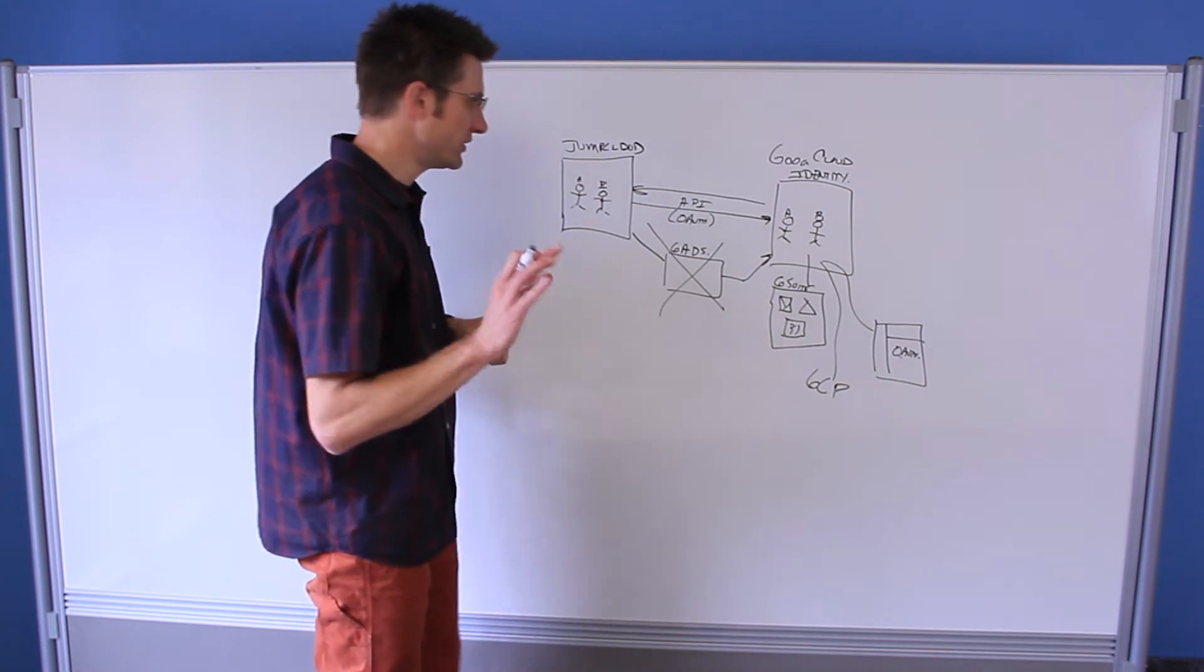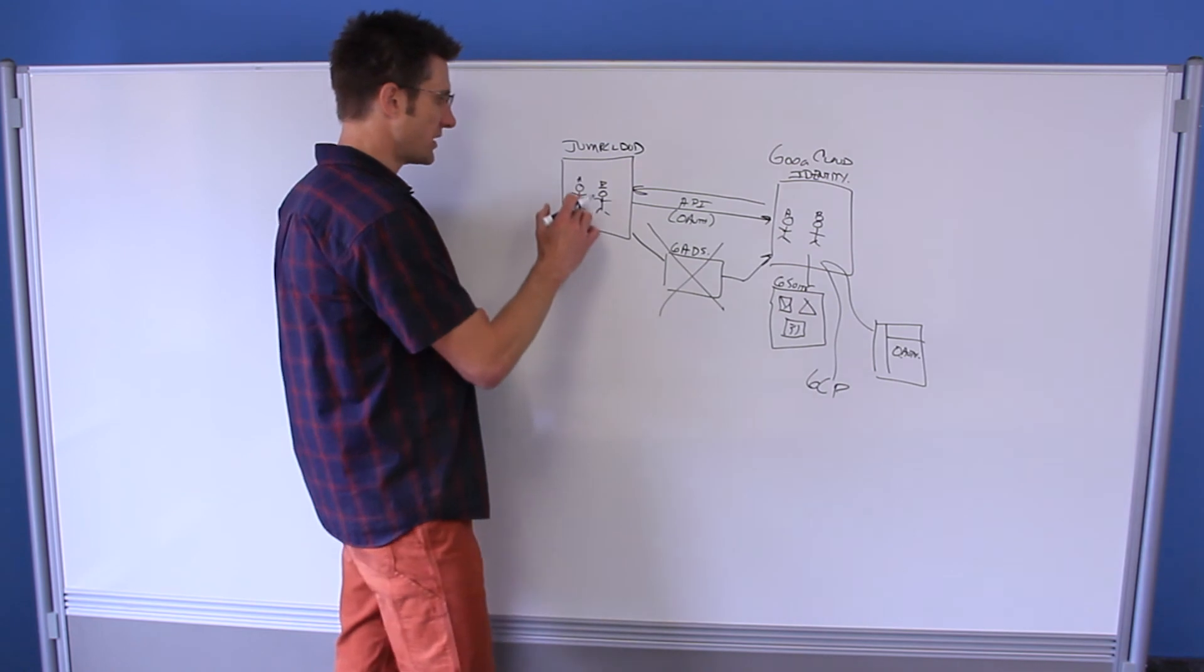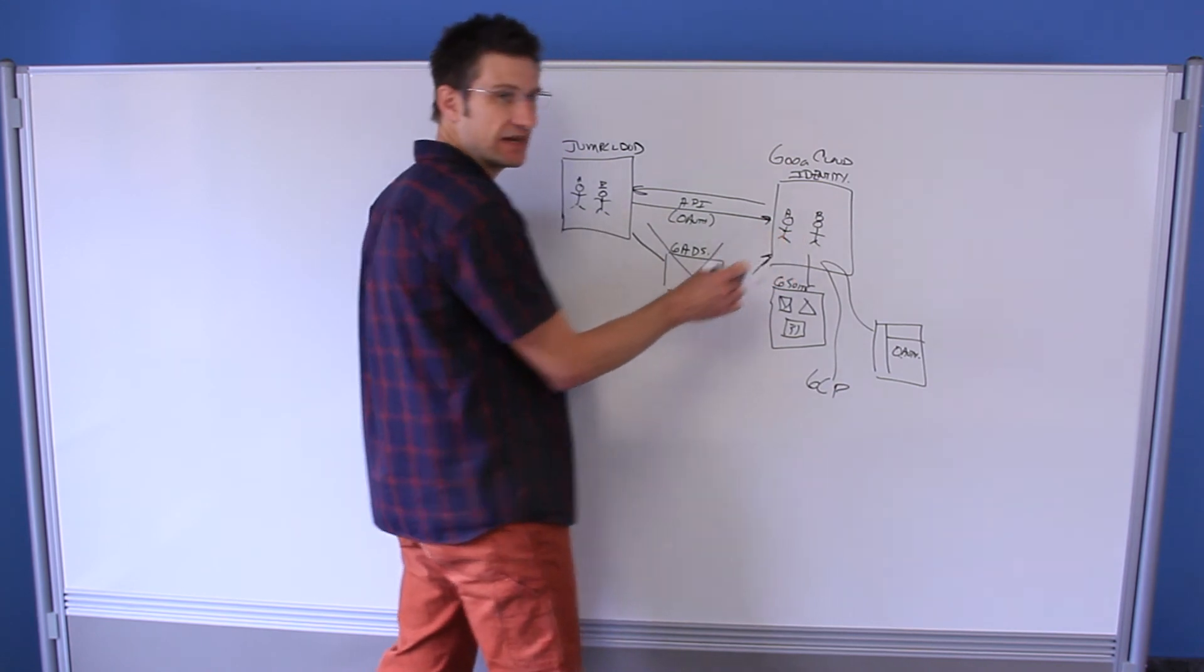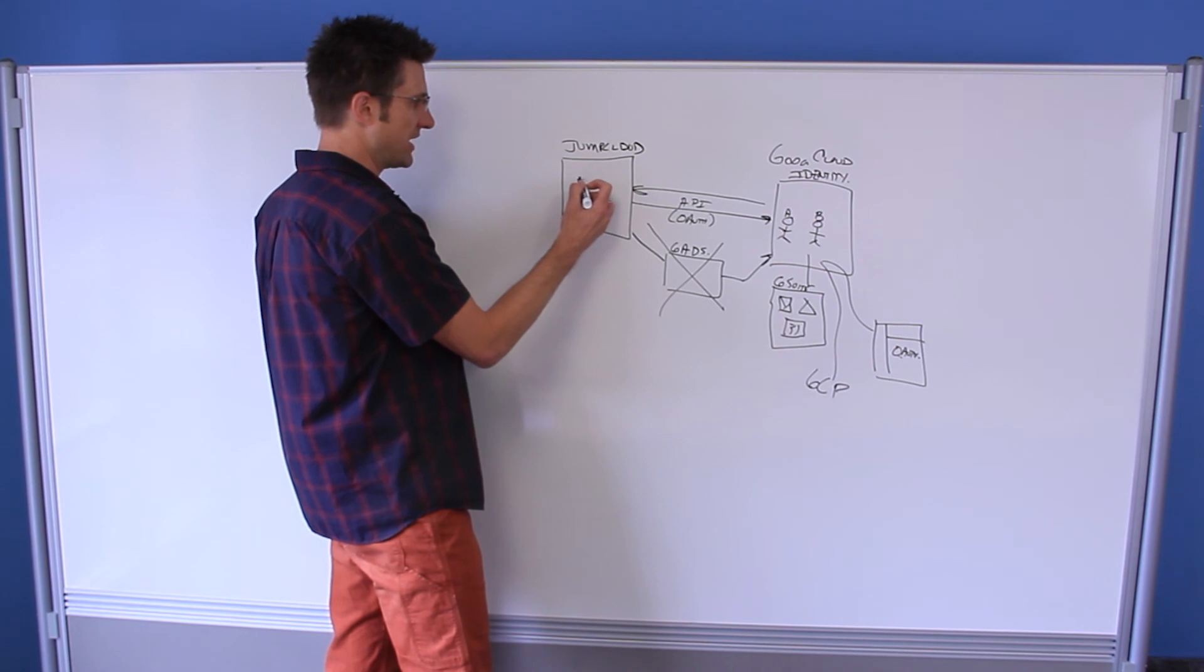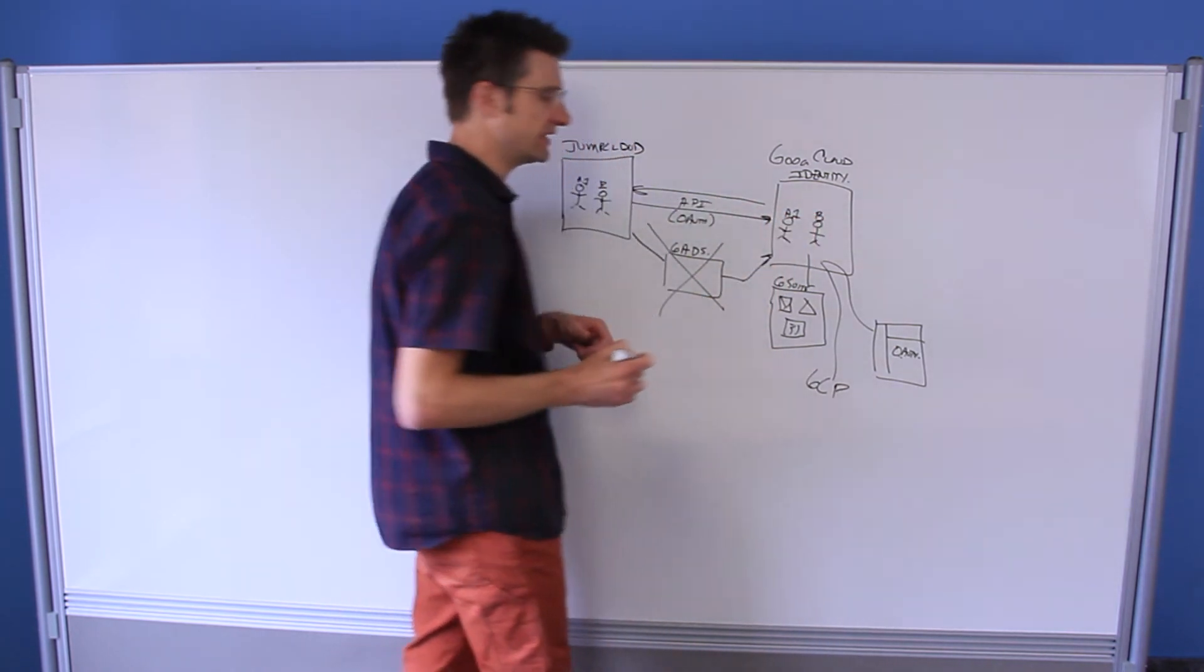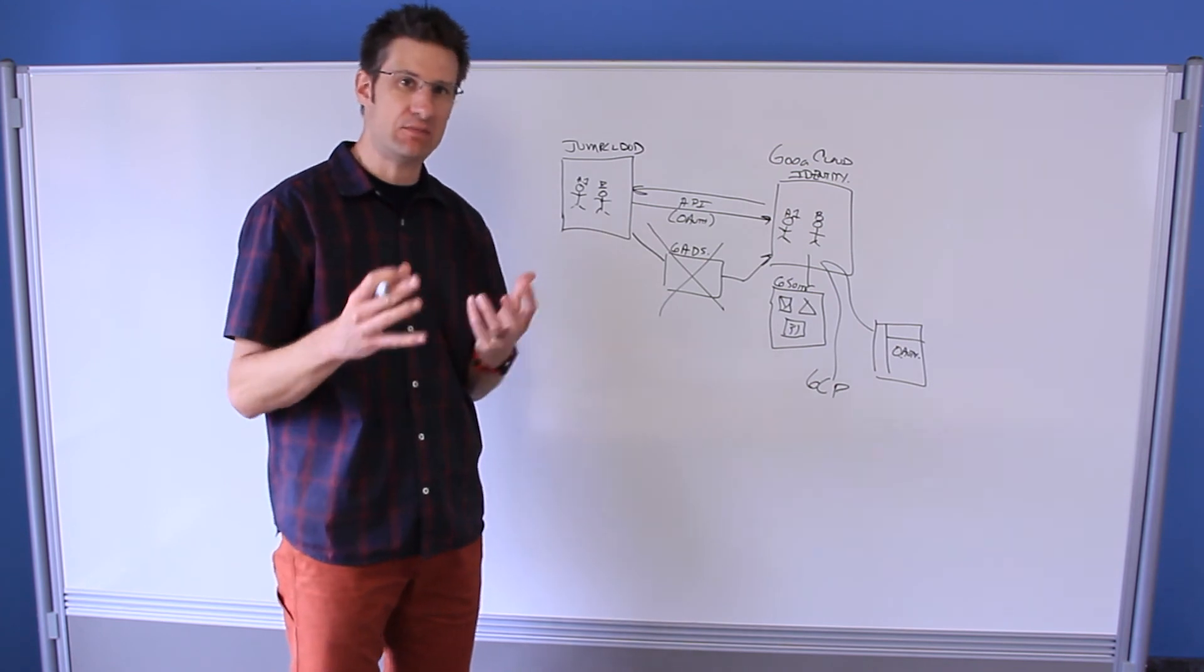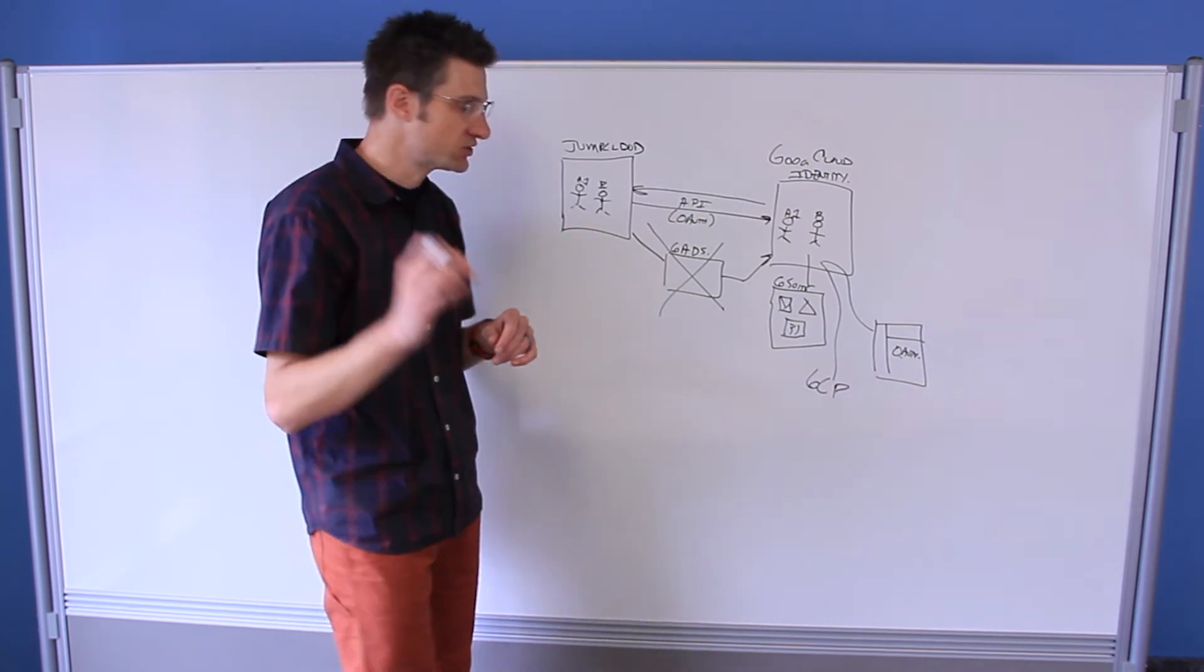One other thing to note here is all metadata changes. Once you have declared that JumpCloud will be the master version of these identities, metadata changes like changing username A to username A.1 will instantly be synced over into G Suite and all the other endpoints, including their Gmail account. Everywhere where the name is reflected, we will own and update.